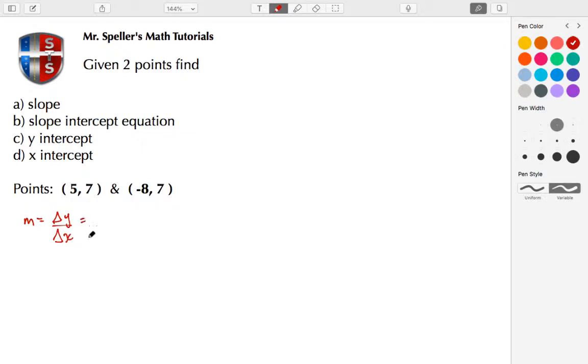The way we show that is to show the difference of the Y values divided by the difference of the X values. Let's go ahead and label the points. This is the first point, so let's label it X₁, Y₁. This is the second point, so let's label that X₂, Y₂.